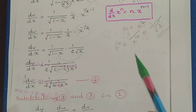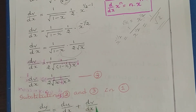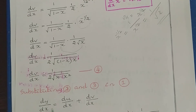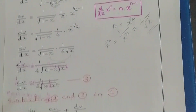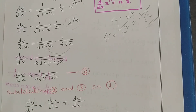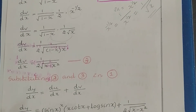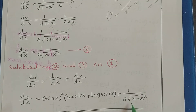Now substituting equations 2 and 3 into equation 1, we get the final answer: dy/dx = (sin x)^x · (x·cot x + log(sin x)) + 1/(2√(x − x²)).